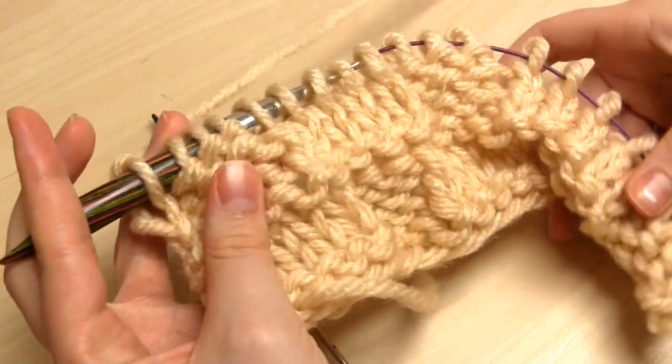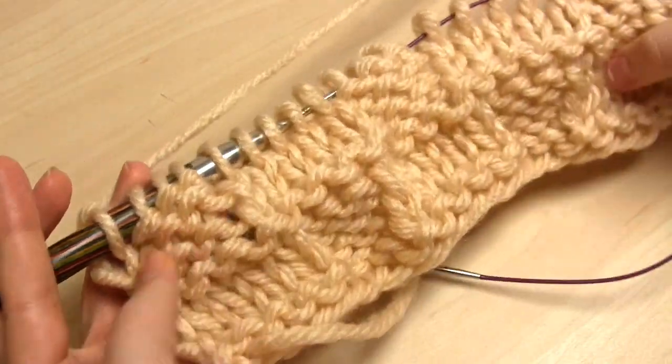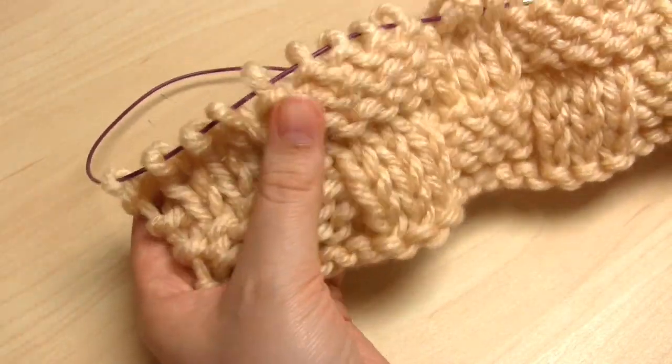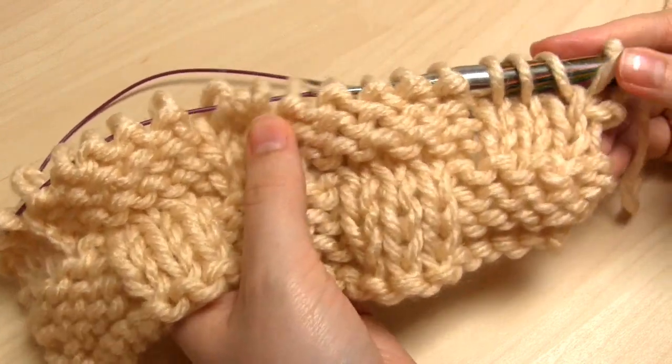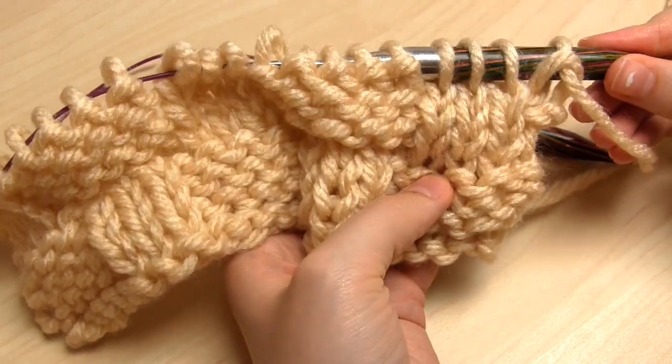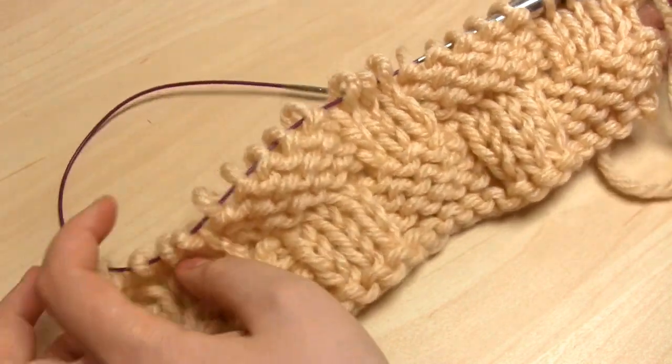Here you can see how the basket weave looks on the back and here you can see how it looks on the front, and you can see all the different blocks of garter stitch and stockinette stitch.